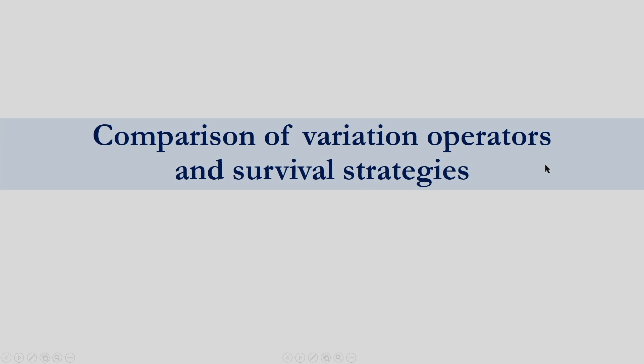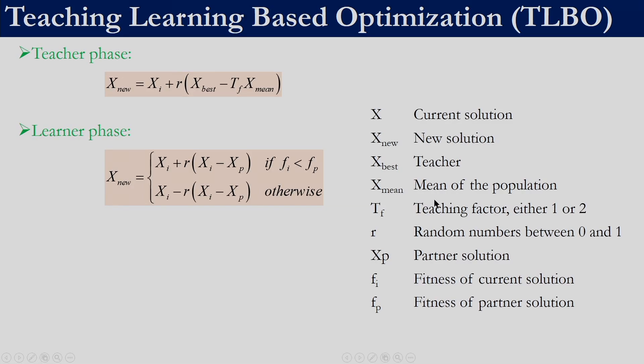First we will be looking into the variation operators. Variation operators are used to generate new solutions from the existing solutions. In TLBO, new solutions were generated either using the teacher phase or in the learner phase. In the teacher phase we will get one solution and in the learner phase we will get one solution. In the teacher phase we will use the solution x_i to generate the new solution.